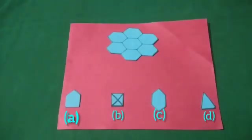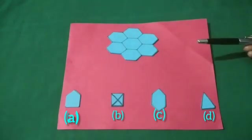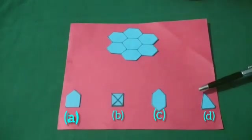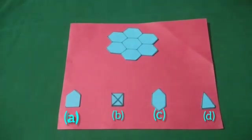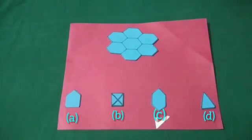In today's sum, a design made from tiles is given here and four types of tiles are given. You have to find the tile from which this design was made. So, look carefully, which tile is used to make this design? Right, option C is correct.